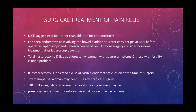Surgical treatment for pain relief: NICE suggests excision rather than ablation of endometriosis. For deep endometriosis involving the bladder, bowel, or ureter, consider pelvic MRI before operative laparoscopy and a three-month course of GnRH before surgery. Consider hormonal treatment after laparoscopic excision. Total hysterectomy and bilateral oophorectomy is indicated for women with severe symptoms where fertility is not a concern. Excise all visible endometriotic lesions at the time of surgery. Pre-menopausal women may need HRT after radical surgery, prescribed under strict monitoring as the risk of recurrence remains.